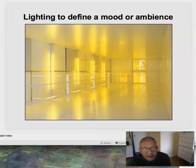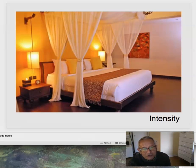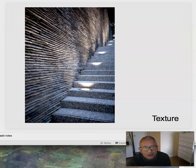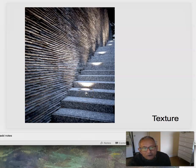Lighting to define a mood or an ambience. Here's an otherworldly feeling with yellow lighting and a highly reflective interior. Here, a more typical approach — in a bedroom we want something soft, soothing, restful. We also light to highlight texture. There's an interesting texture in this wall, and these uplights are doing a really good job of highlighting it and adding to the richness of the space.